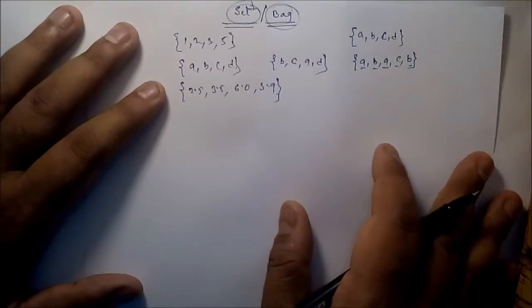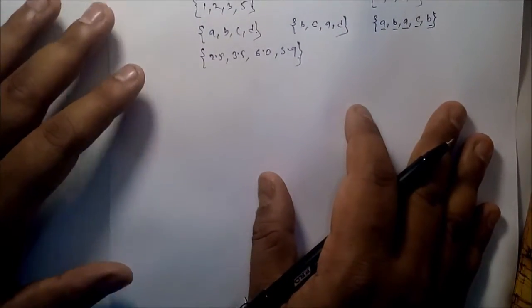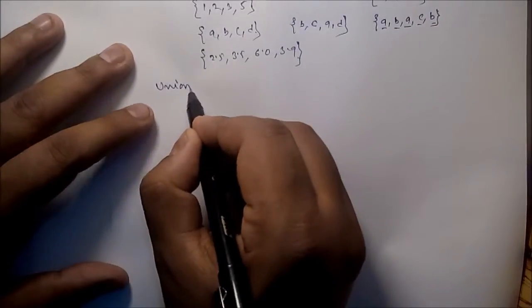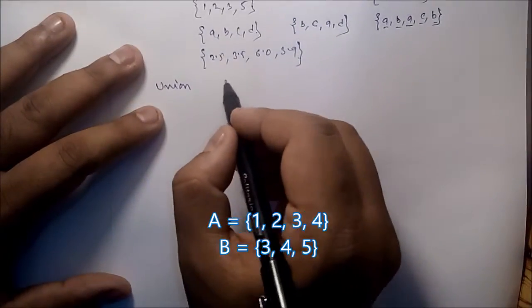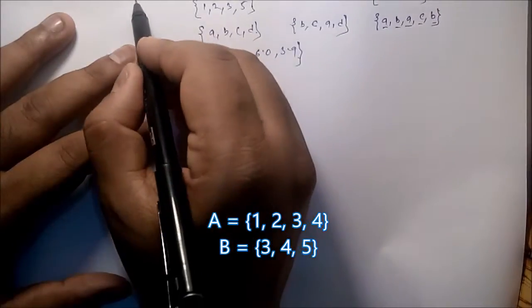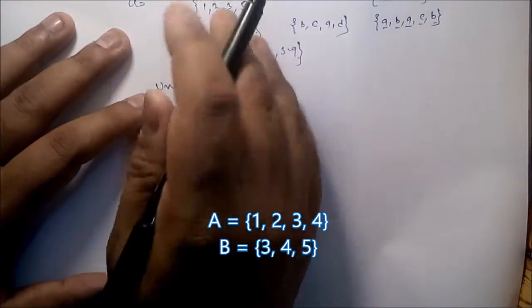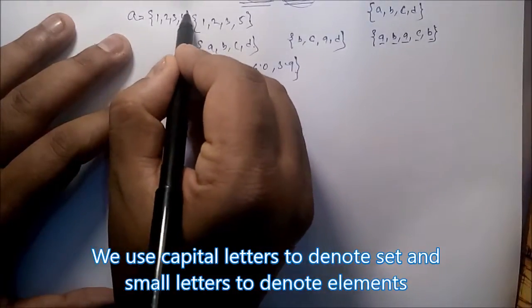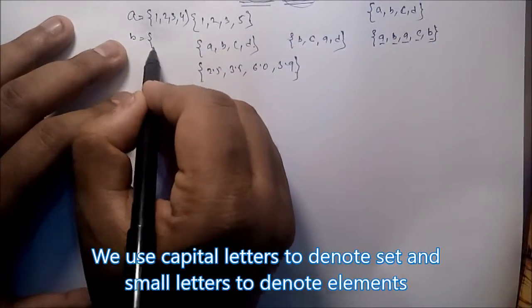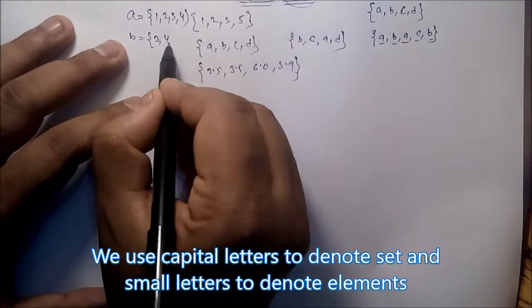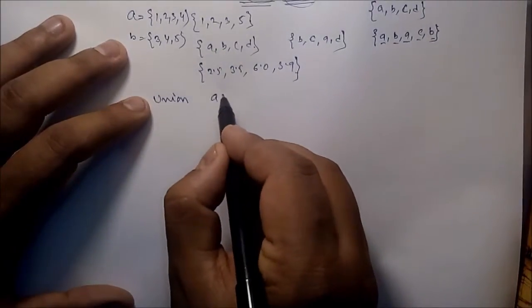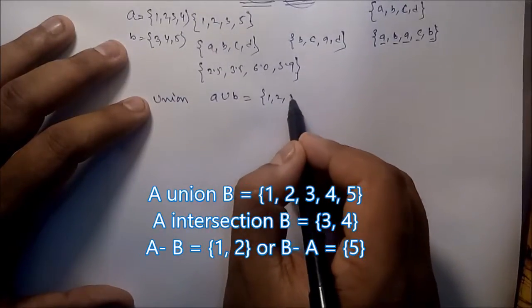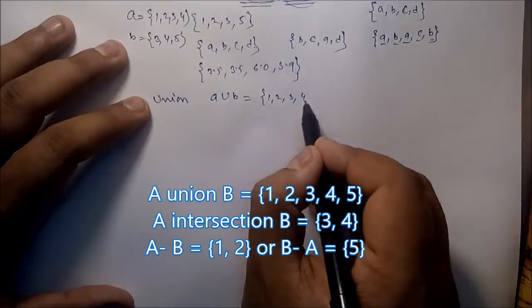Now some basic operations. The first is union. Suppose set A = {1, 2, 3, 4} and set B = {3, 4, 5}. Then A union B = {1, 2, 3, 4, 5}.